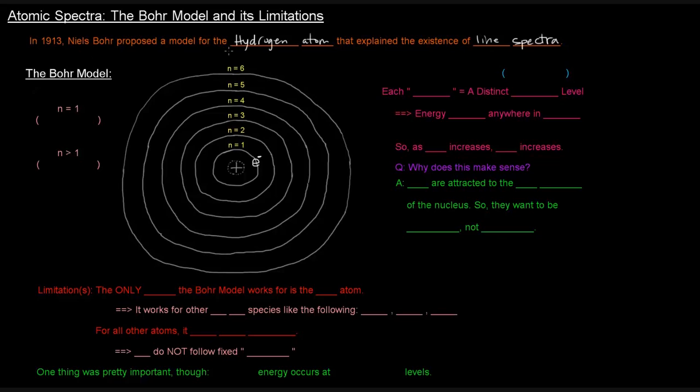This is his model here. Basically, keep in mind that it was for the hydrogen atom, which is just one proton and one electron. So we've got the nucleus here with one proton represented by this plus sign, and then we have the electron here, E minus. And basically what he said is that the electron travels in specific circular paths around the nucleus. There are a bunch of different paths, some closer to the nucleus and some further away. Each of these paths is called an orbit.